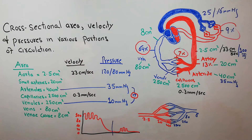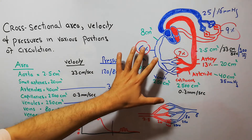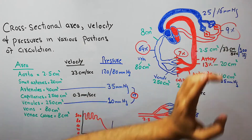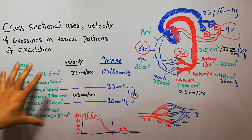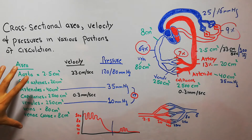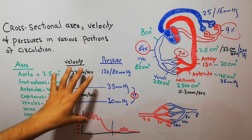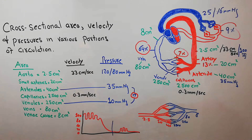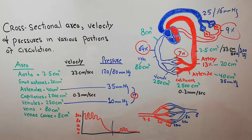We also discussed the amount of blood present in different portions of the circulatory system: around 64% is in the veins, around 9% is in the lungs, and around 7% is in the capillaries and arterioles. Today we will briefly discuss the estimated cross-sectional area, estimated velocity, and pressure in different parts of the circulatory system.